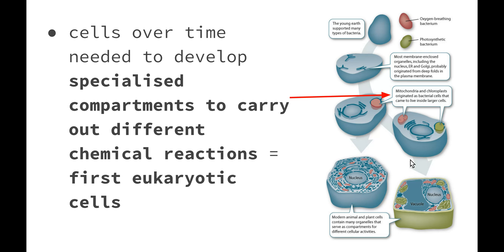Cells over time needed to develop specialized compartments to carry out different chemical reactions. This would have been our first eukaryotic cells. Mitochondria and chloroplasts possibly would have originated as bacterial cells, came into these cells and then they became the organelles that had a membrane around them. Eukaryotic cells are those that have a true nucleus. Eukaryotic, we usually say true karyotic, is in reference to the nuclear compartment.